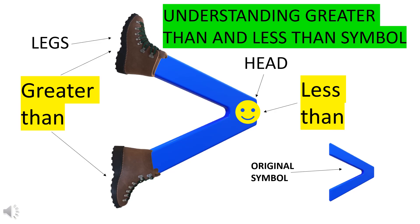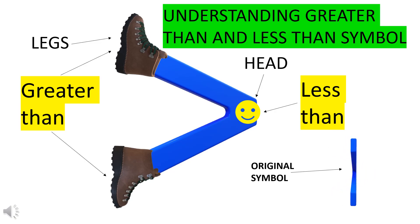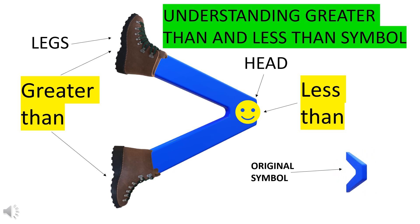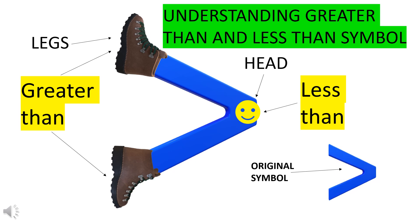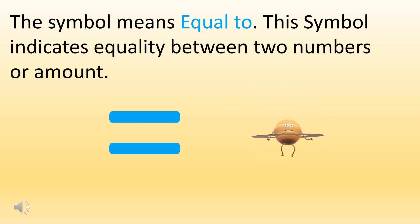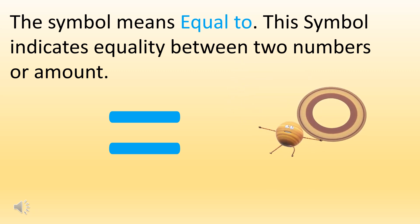When comparing numbers, the symbol's legs face the greater number, while its head faces the lesser number or amount. This symbol means equal to. This symbol indicates equality between two numbers or amount.